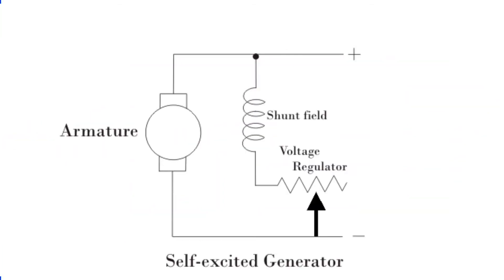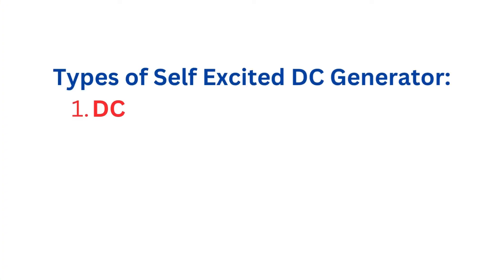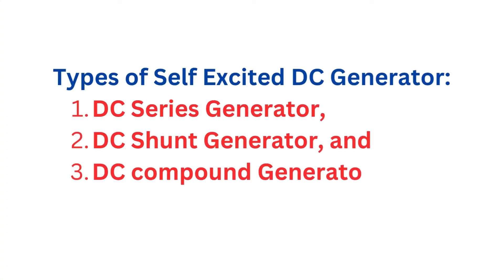Moving on to self-excited DC generators, these are designed to use their own generated voltage to power the field windings. There are three subtypes here: series, shunt, and compound.